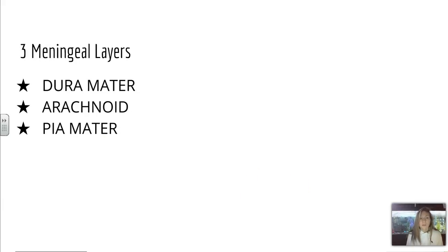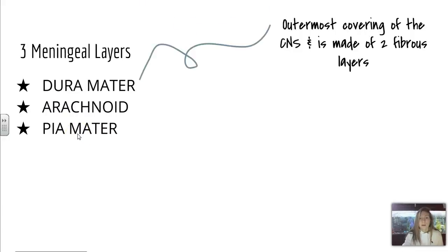The three meningeal layers are the dura mater, the arachnoid, and the pia mater. The dura mater is the outermost covering of the central nervous system and is made up of two fibrous layers. Remember that 'dura' means hard and 'mater' means mother, so this is the hard outer core of the meningeal layers.